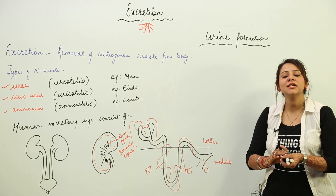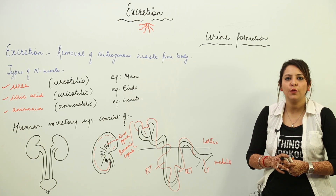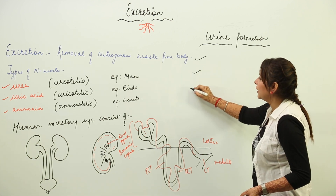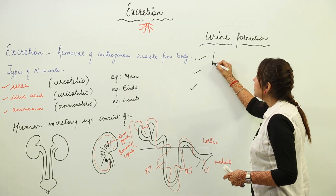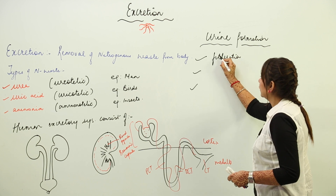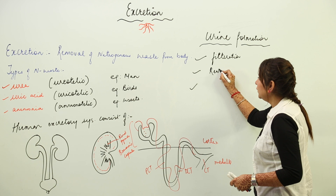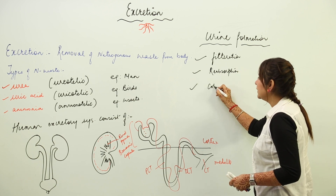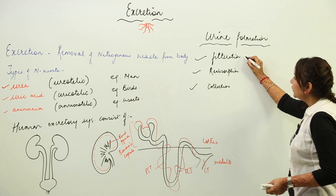Now we are going to start with urine formation — that is, how urine is formed in a human body. Urine formation consists of three parts: the whole mechanism is divided into filtration, reabsorption, and collection.